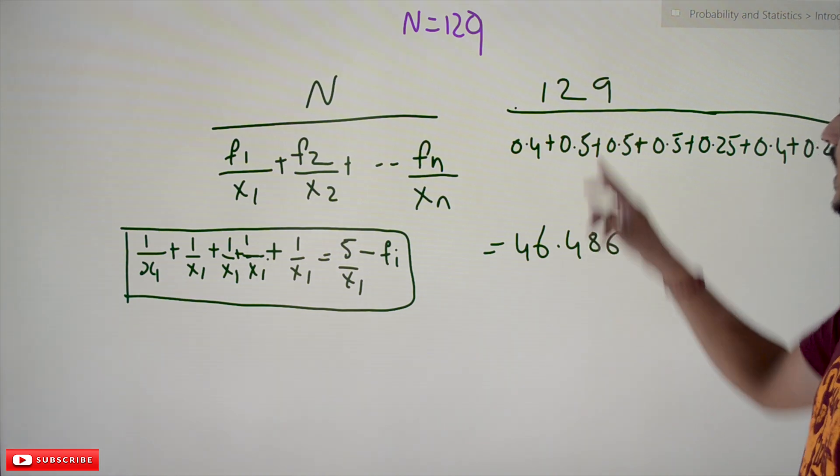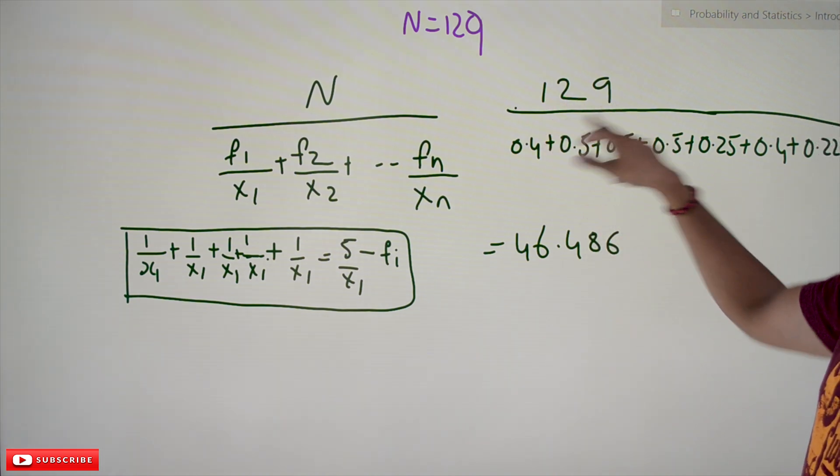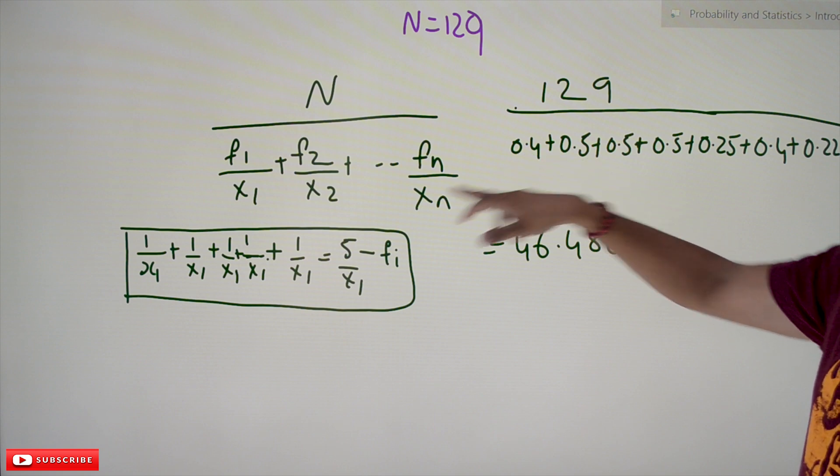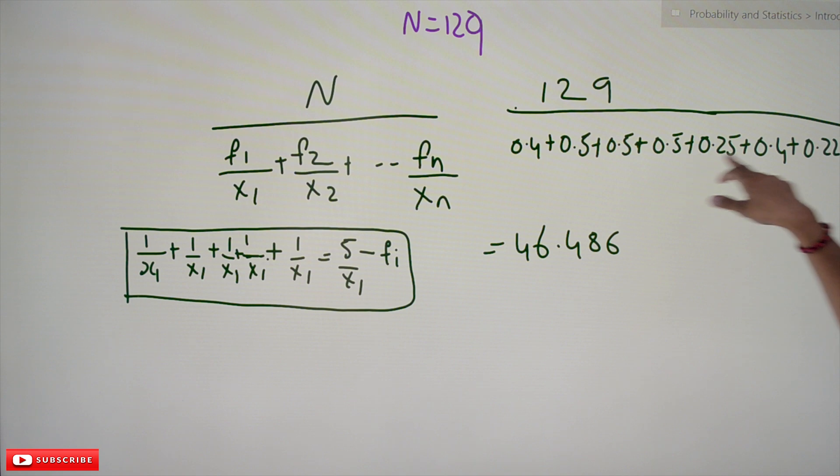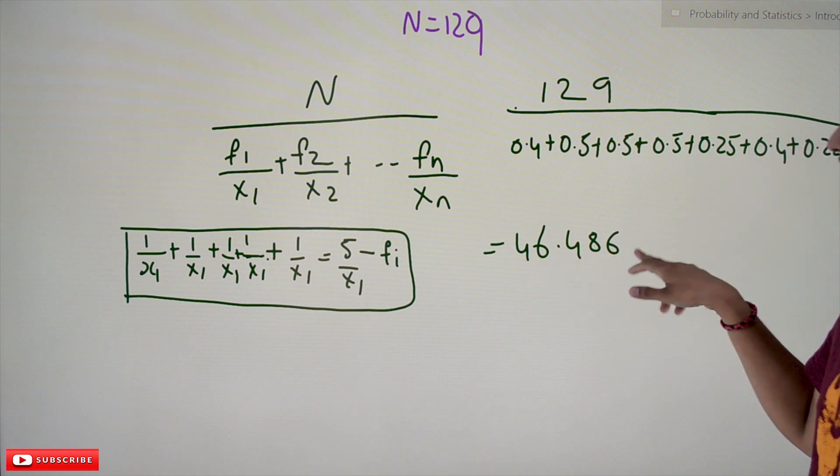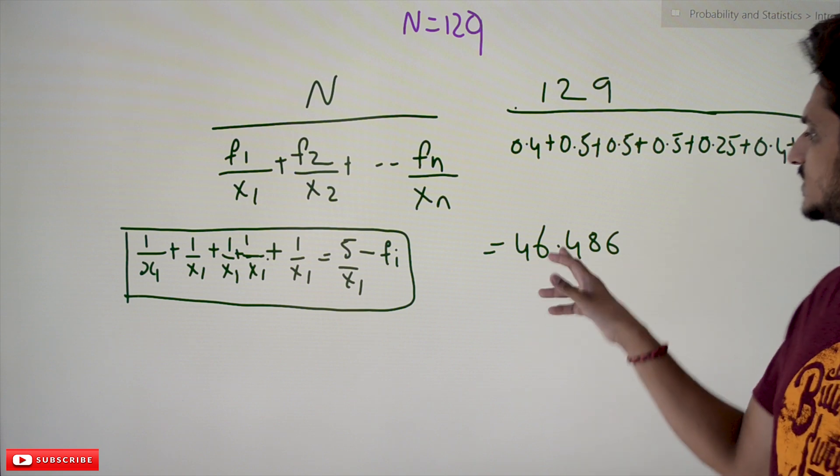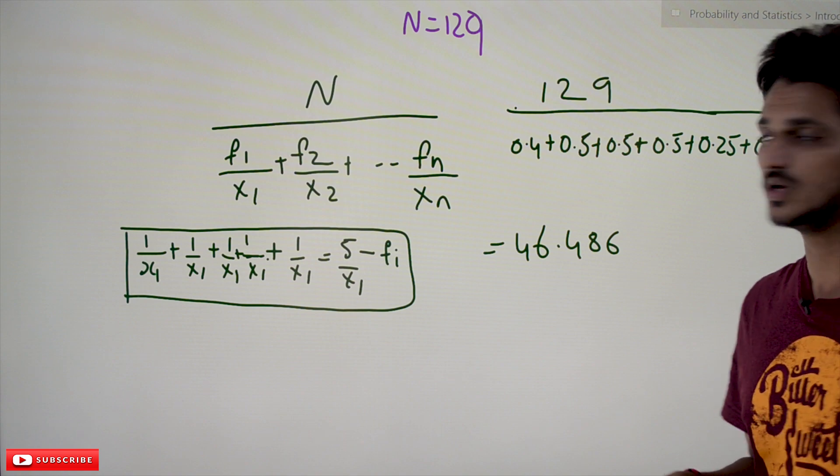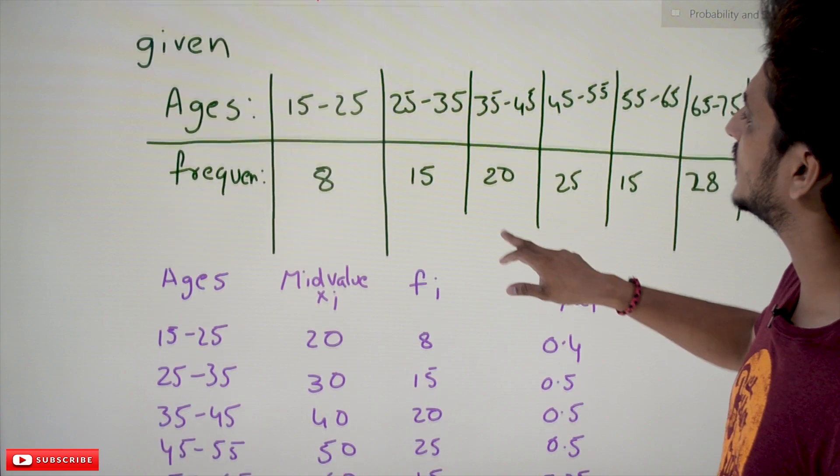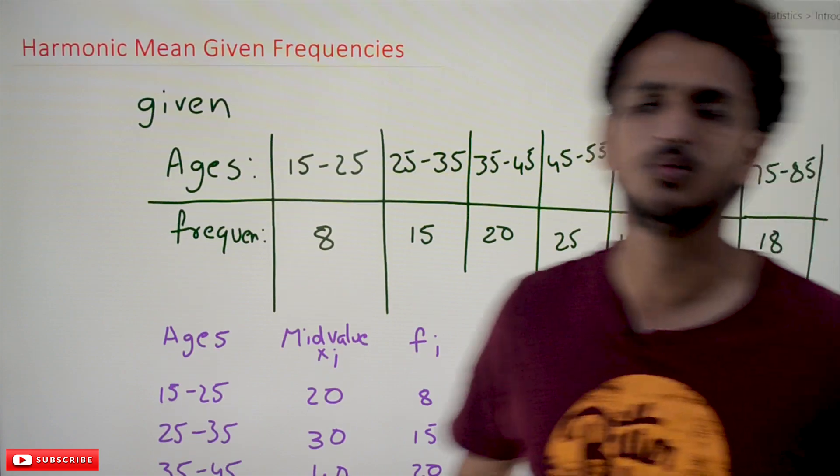So, 129 divided by the F1 by X1 values: 0.4 plus 0.5 plus so on. These are the values. If you calculate this, the harmonic mean is 46.486. This is how we calculate the harmonic mean given continuous class intervals and frequency distribution. Hope you understand the concept.